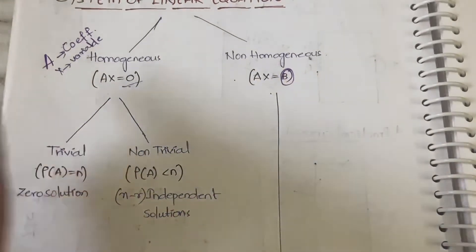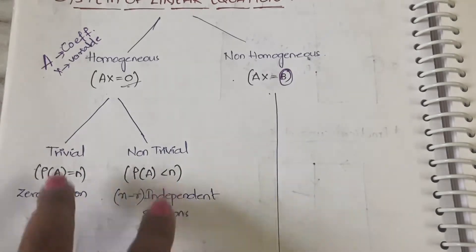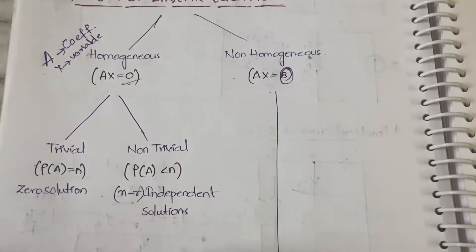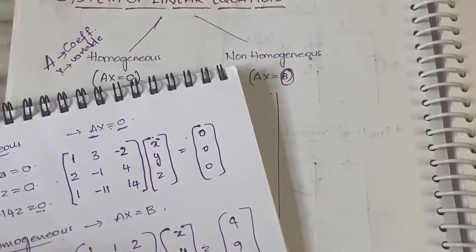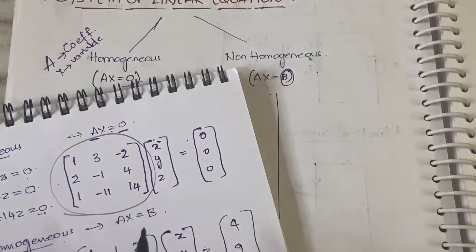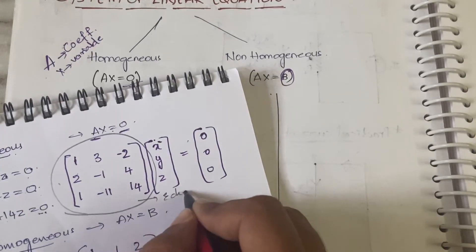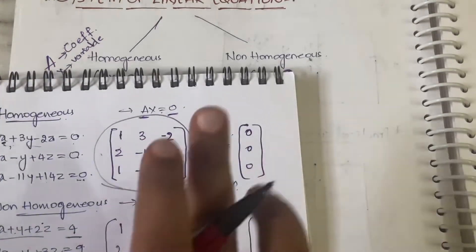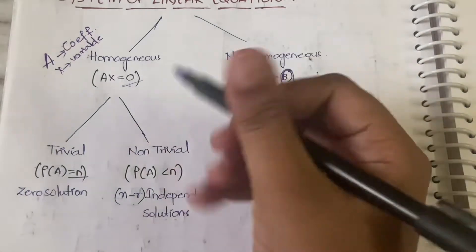In homogeneous equations we have two sub-classifications: trivial and non-trivial solutions. For the trivial solution, if the rank of A equals n — where n is the number of unknowns — then it is called a trivial solution. You find the rank of matrix A using echelon form.